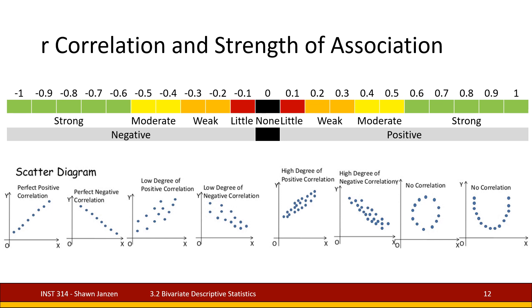There are also two scatter plots in the lower right corner — one that looks like an O and one that looks like a U. Neither of these have a meaningful correlation value because there is no singular linear line forming. With the O-shaped scatter diagram, you can't fit one particular line through it — you'd just keep spinning it around. With the U-shaped parabolic one, as X goes down Y goes up for a while but then changes direction and comes back around. So there's no linear correlation in either case. We'll come back to some of these in the correlation section.